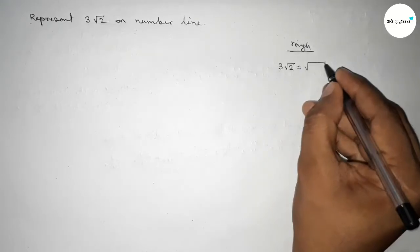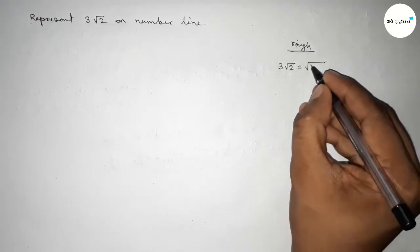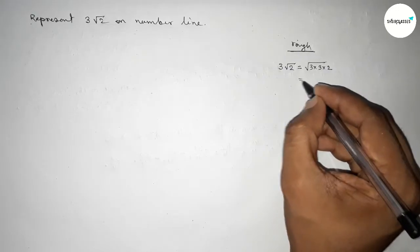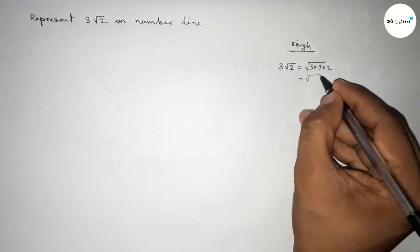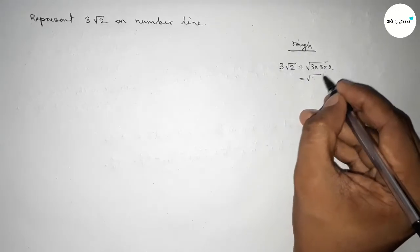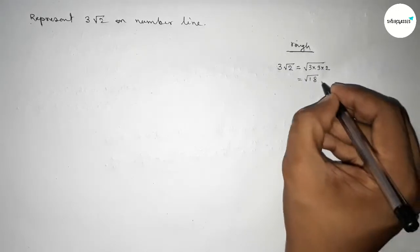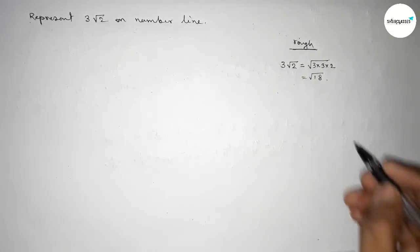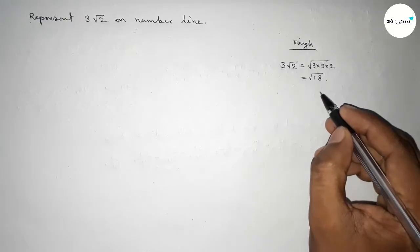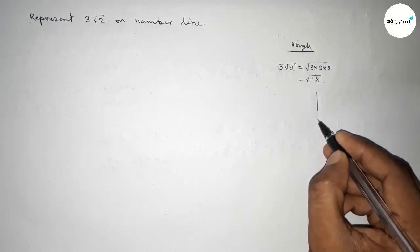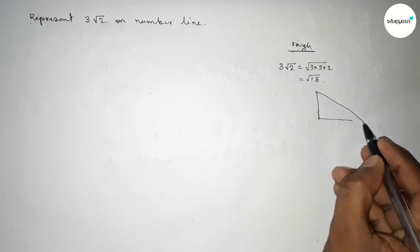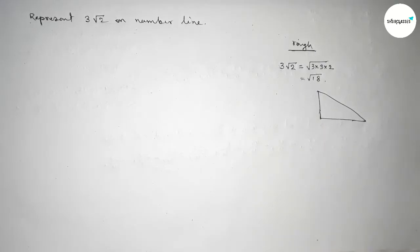We can write 3√2 as √(3 × 3 × 2), which equals √18. So first we have to draw √17, and for that we first draw a right angle triangle roughly.